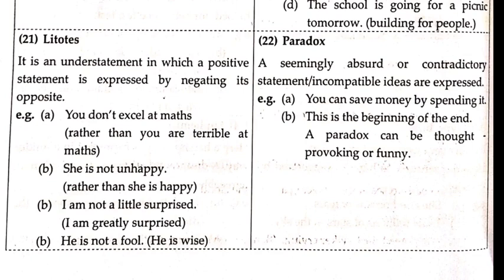The 21st figure of speech is litotes. It is an understatement in which a positive statement is expressed by negating its opposite. Examples: 'You don't excel at maths' rather than 'you are terrible at maths.' 'She is not unhappy' means she is happy. 'I am not a little bit surprised' means it is a great surprise. 'He is not a fool' means he is wise. Such double-meaning sentences are called litotes, used for greater poetic effect.